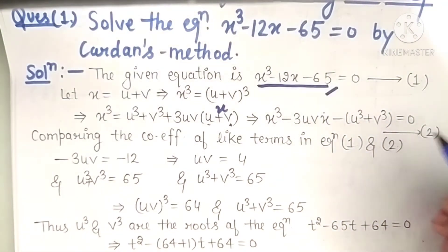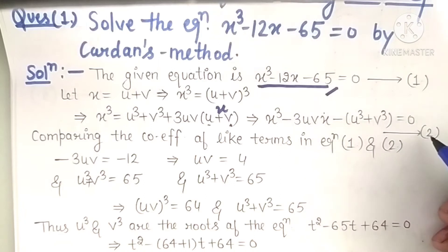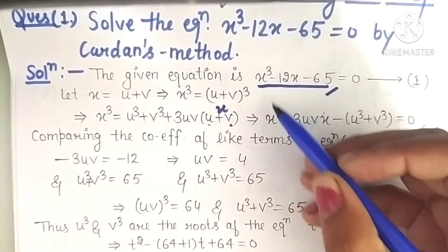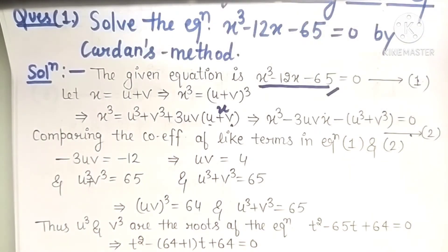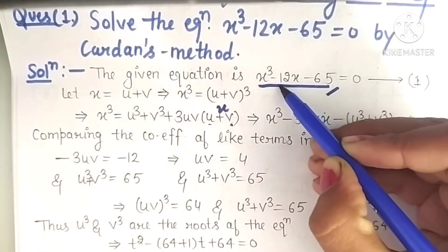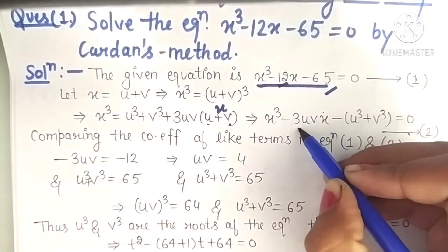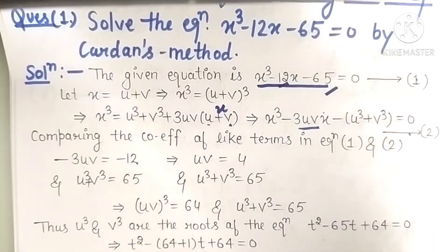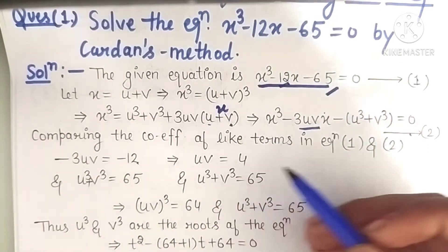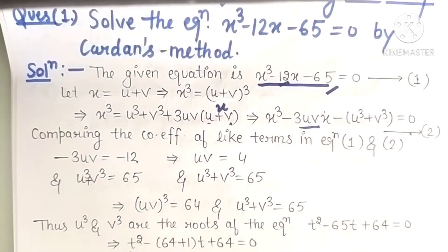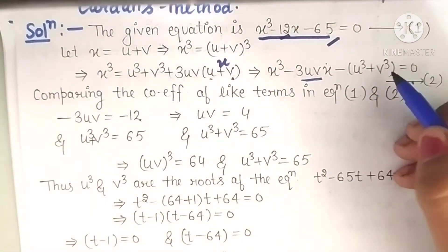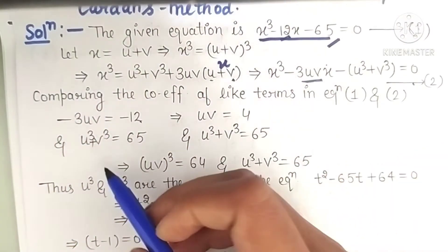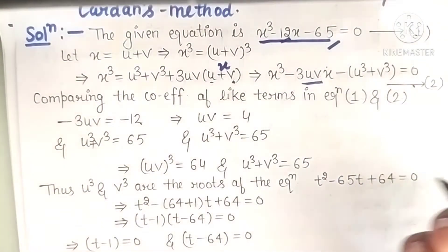Now we compare equation 2 with equation 1. The coefficient of x³ is 1 on both sides. Comparing the coefficient of x: minus 3uv equals minus 12, so uv equals 4. Comparing the constant term: u³ plus v³ equals 65. Now we need to form an equation.